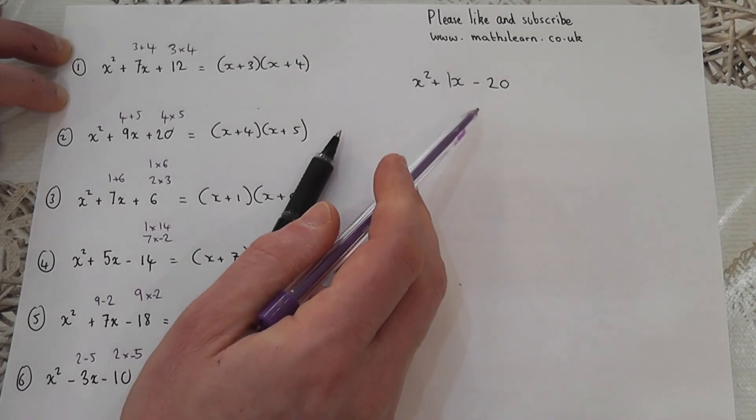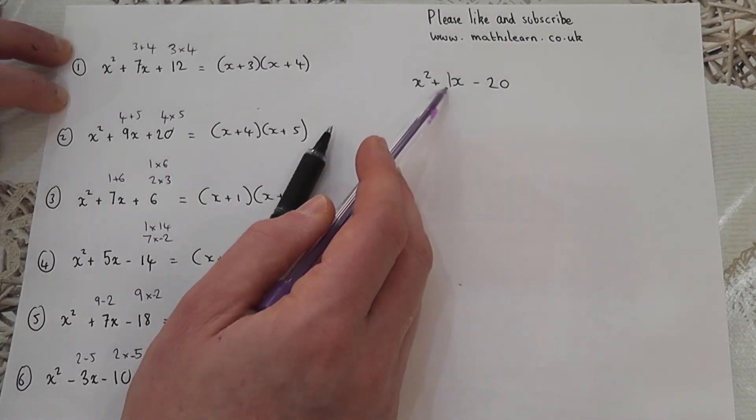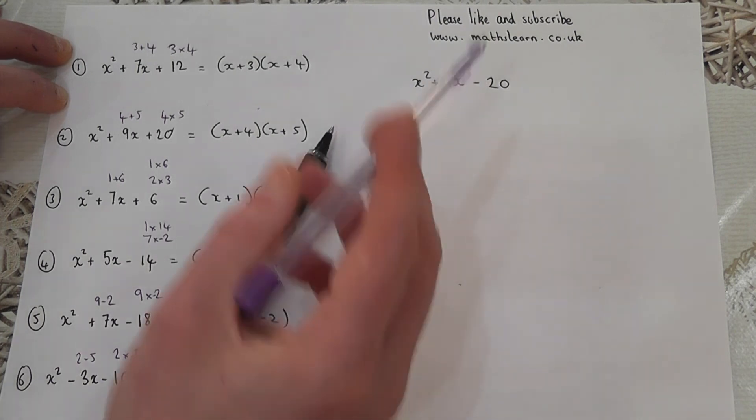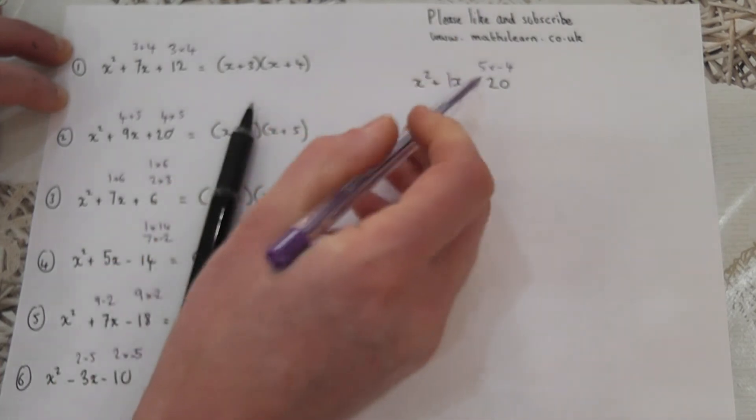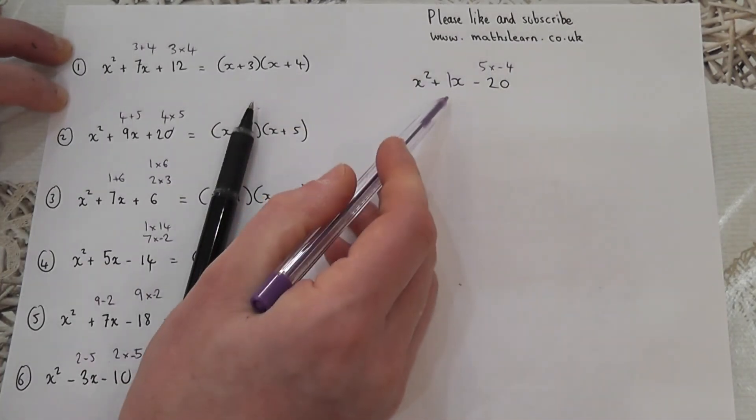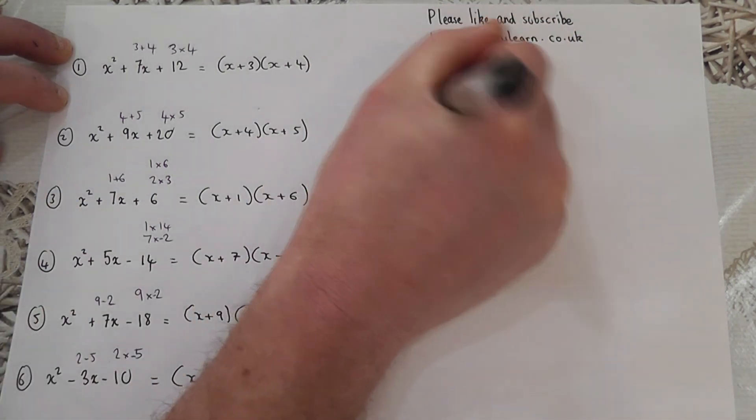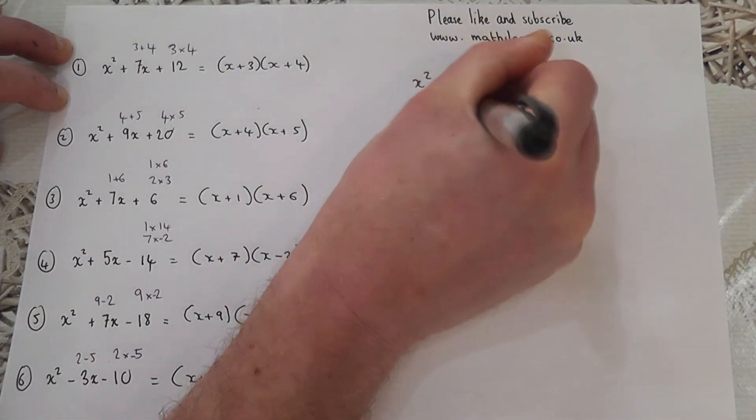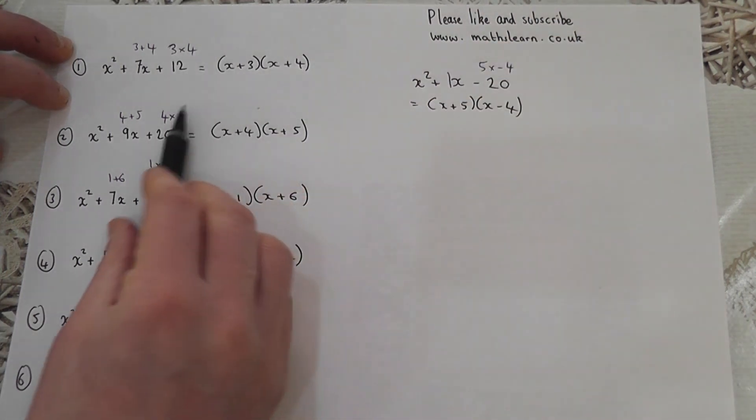Looking at the minus 20, I want factor pairs which have got a difference of 1. If I did 5 times minus 4, then 5 and minus 4 have got a difference of 1, and 5 times minus 4 is minus 20. So the answer is x plus 5 and x minus 4.